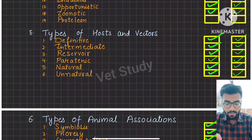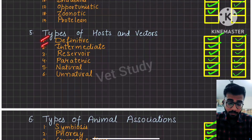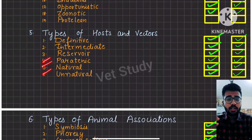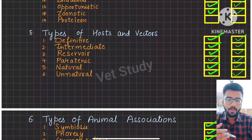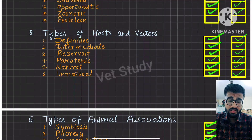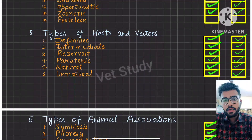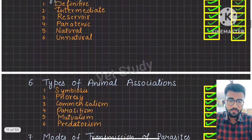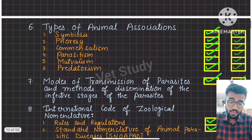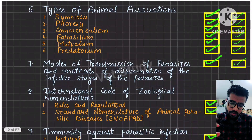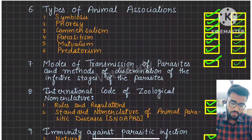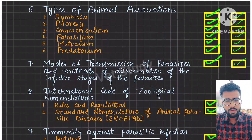Types of host and vector is also a very important topic for 1-mark questions: definitive, intermediate, reservoir, paratenic, natural, and unnatural hosts. It is necessary to know these clearly. Once you don't have general concepts clear, you won't be able to go ahead. For example, if you don't know what a paratenic host is, you won't understand it in specific parasite discussions.